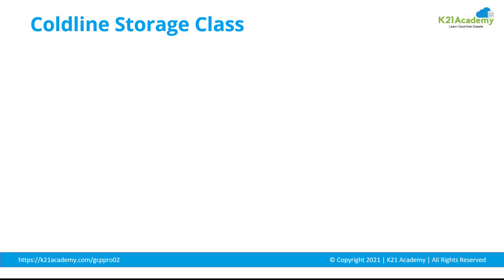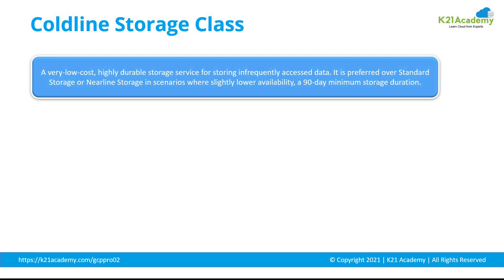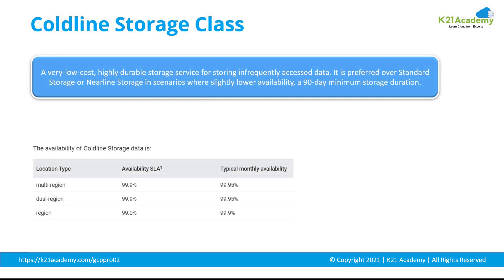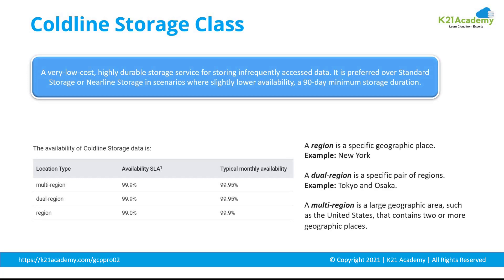Coming up next, we have cold-line storage class. It is a very low-cost, highly durable storage service for storing infrequently accessed data. Cold-line storage is a better choice compared to standard storage or near-line storage in scenarios where there is slightly low data availability. It is ideal for data that you plan to read or modify at most once a quarter.